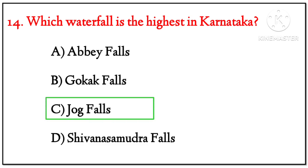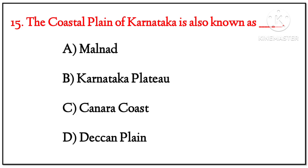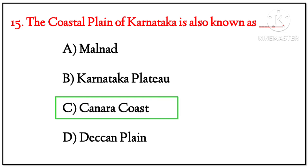Question 15: The coastal plain of Karnataka is also known as? Options are Malenadu, Karnataka Plateau, Karavali Coast, and Deccan Plains. The correct option is C — Karavali Coast.